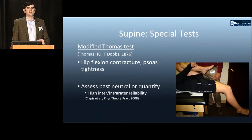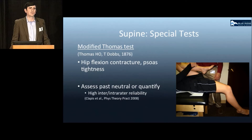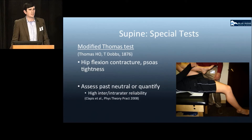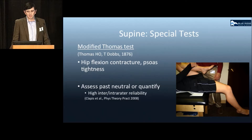The modified Thomas test is performed with the patient at the end of the table, bringing the contralateral extremity up to the chest and observing how far down the ipsilateral extremity falls. This is a test for hip flexion contracture or psoas tightness. A positive test is either failing to drop below neutral or can be quantified in degrees, and has high inter-rater reliability.